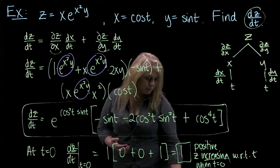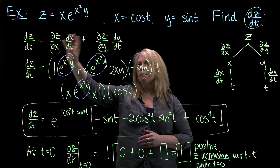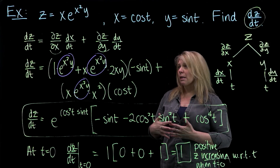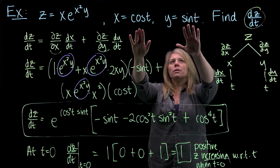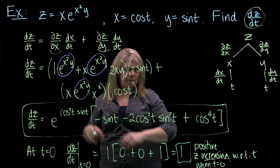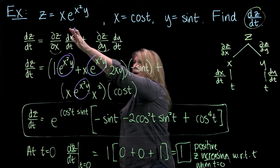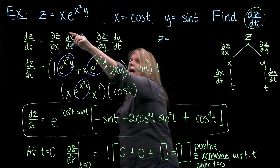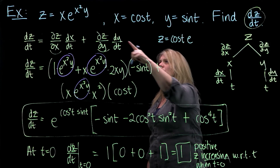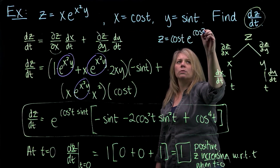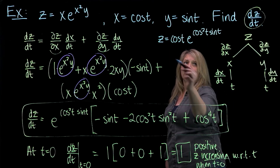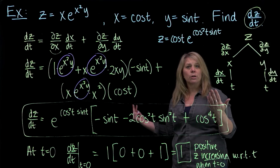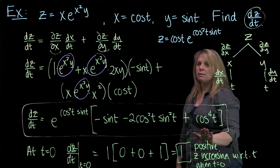There is one other way I could have done this problem, but I do want you to be able to write down the chain rule even if you solve it differently. Some of you might recognize — and the textbook does this as well — if I had just substituted the cosine and sine functions into the original expression at the very beginning, I could have rewritten z completely in terms of t: z = cos(t)·e to the cos²(t)·sin(t). Then I could have taken the ordinary derivative. It's a pretty complicated derivative with two product rules and two chain rules, but you'd end up with the same result when you simplify.